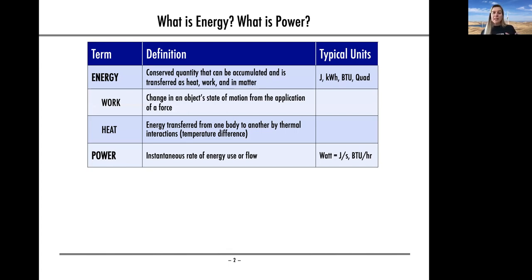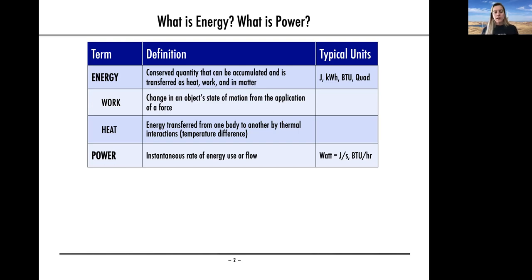The units we use for energy are things like joules, kilowatt-hours, British Thermal Units (BTUs), or quads — a quadrillion BTUs — when talking about a lot of energy. Power, on the other hand, is the flow of energy; it's the instantaneous rate of energy. The units for power are a joule per second, or BTU per hour — those are your power units, your flow rate of energy.